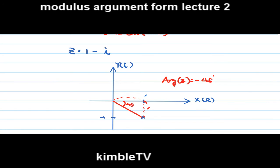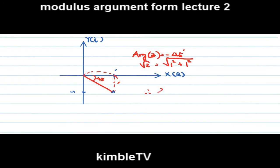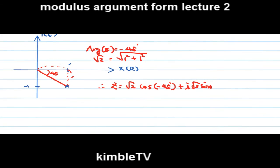Hypotenuse length is root 2 because 1 squared plus 1 squared equals root 2 by Pythagorean theorem. Therefore, z equals root 2 cos minus 45 degrees plus i times root 2 sin minus 45 degrees. Therefore, root 2 cis minus 45 or minus pi over 4. This is modulus argument form.